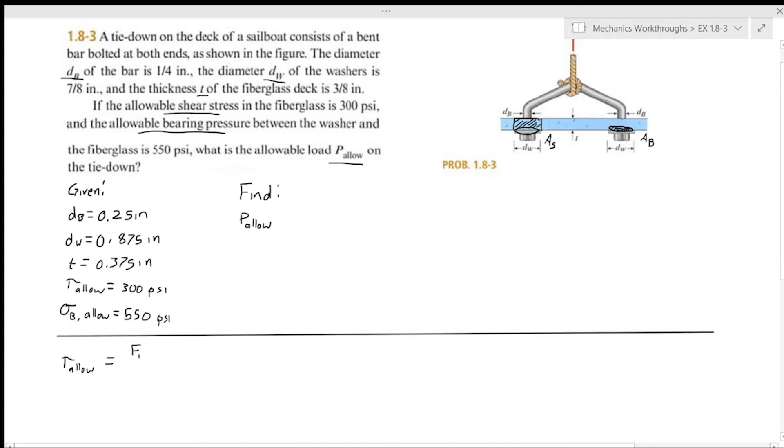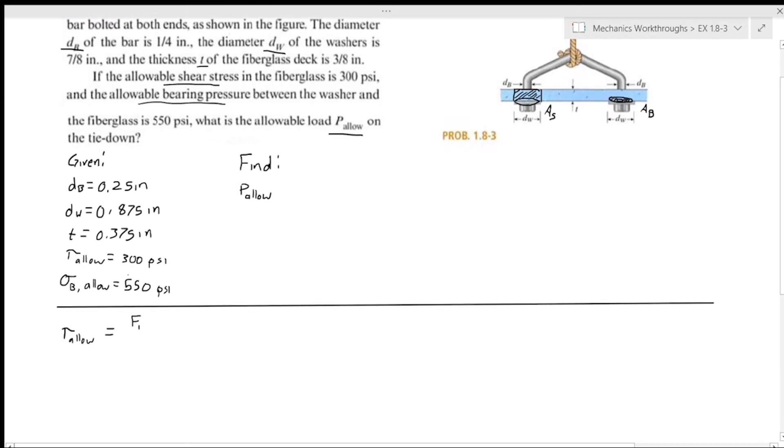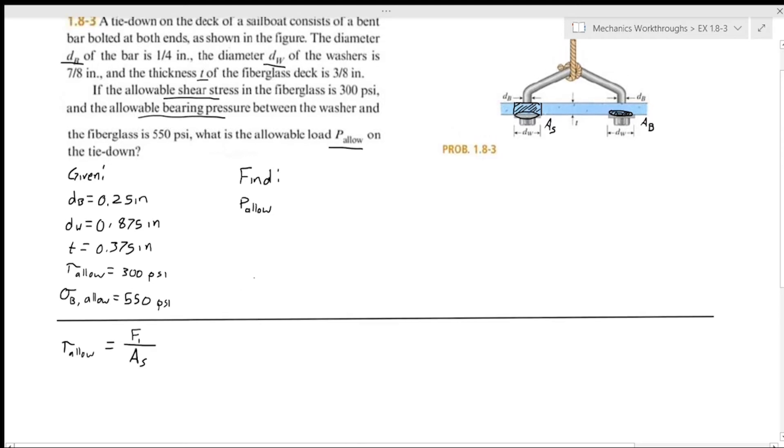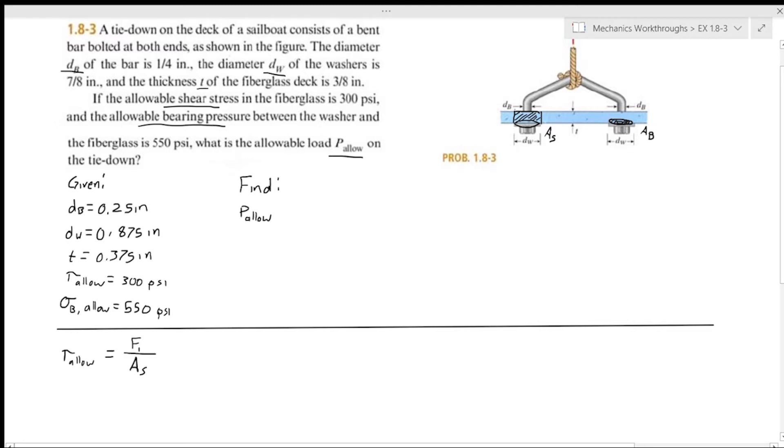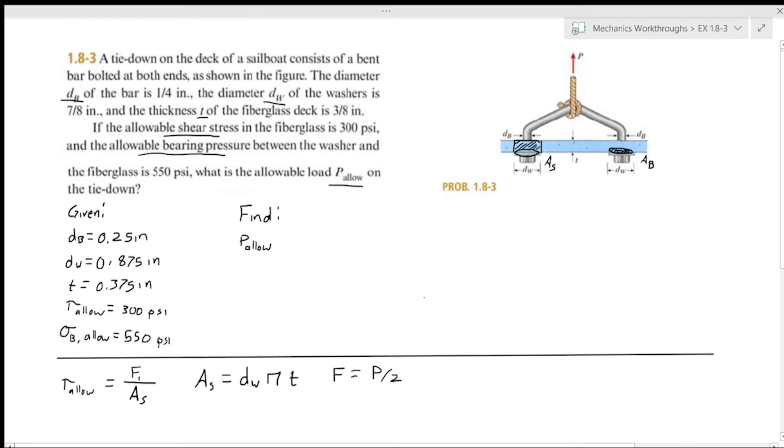For this we'll call this force one, the force on one side of this problem. But this is a symmetric problem, so we know that the force will just be p over two. So we have force over area and we need to know what our area is. This is the area that our shear stress is on. As we talked about, this is the outer surface of a cylinder inside the fiberglass. The equation for that would be the diameter of our washer times pi times the height of the cylinder, which would be the thickness of our fiberglass t. And our f is going to equal p over two because it's symmetrical and the force will be split evenly.